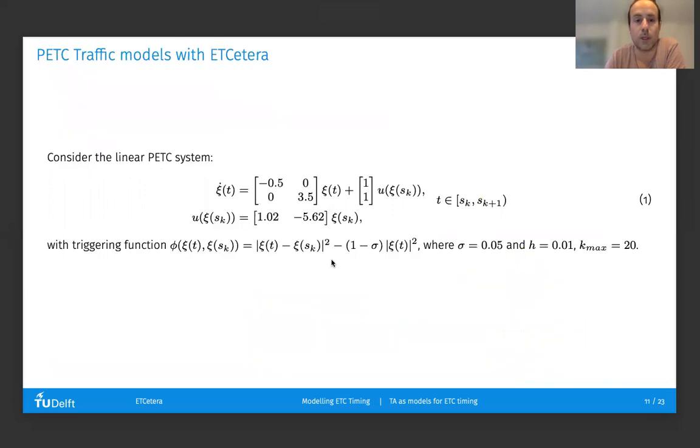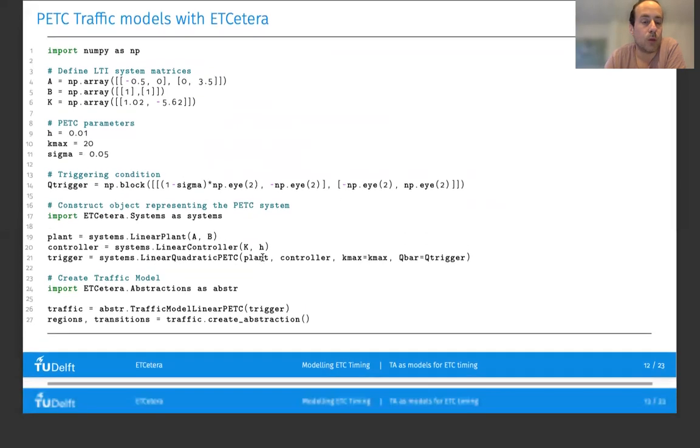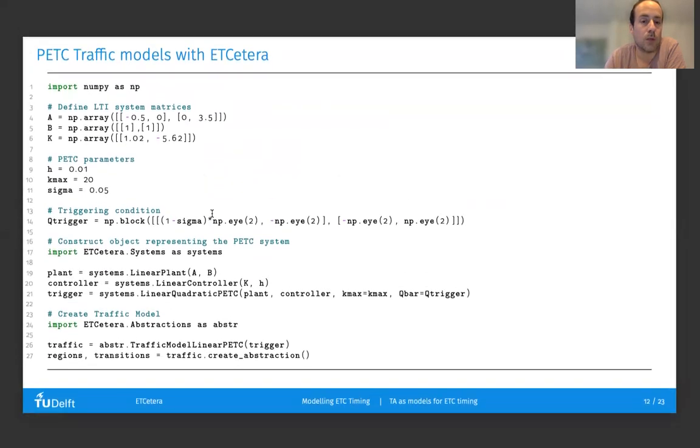This is done very simply in ETCetera, given a periodic event-triggered control system with some matrix A, B, controller K, and some quadratic triggering condition. One simply needs to specify in a Python script the system and parameters for the triggering condition. Then, automatically, one can construct a model for the periodic event-triggered control system and call a method to abstract the model into a finite abstraction.